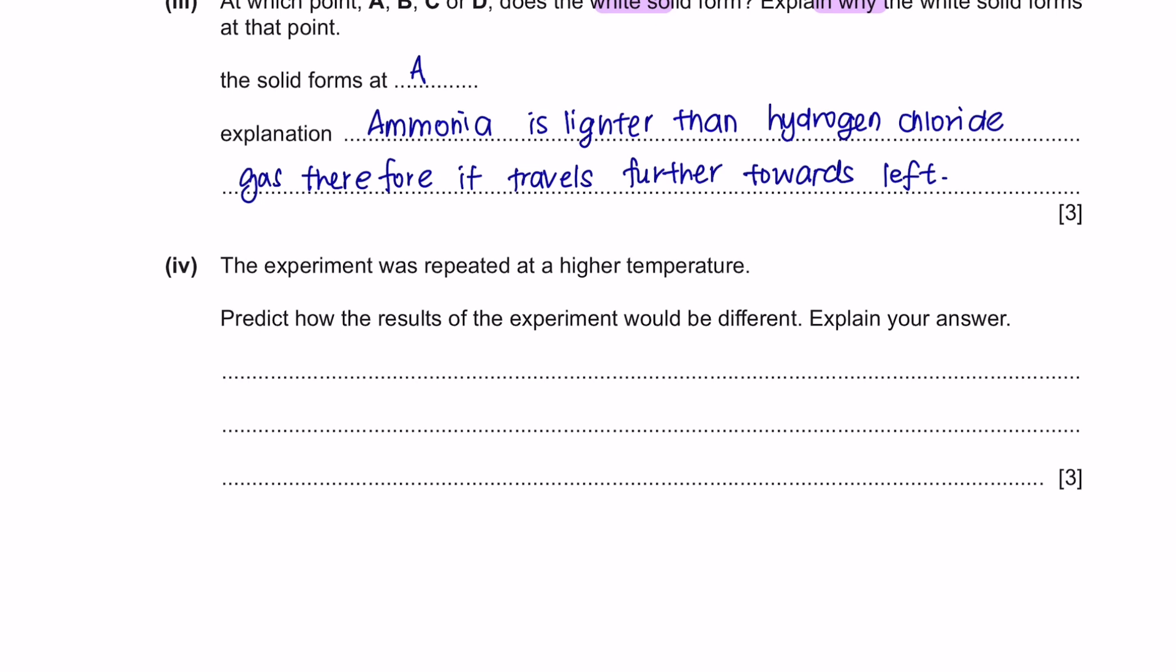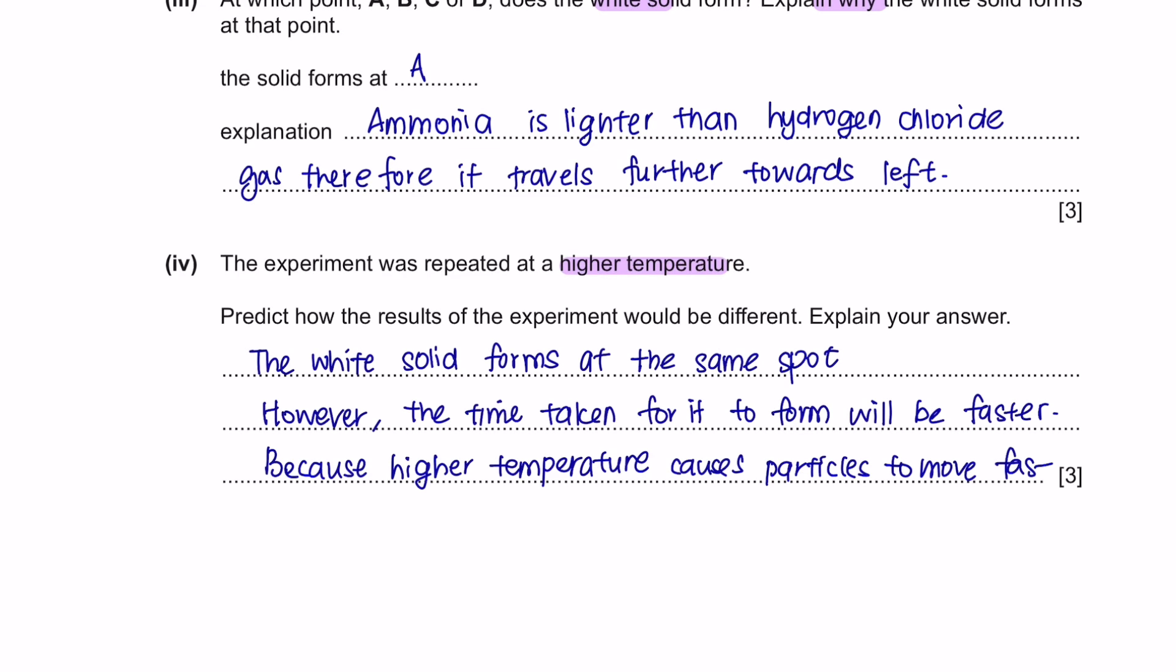Next, part 4. The experiment was repeated at a higher temperature. Predict how the results of the experiment would be different. So, the concept is going to be the same. We can say that the white solid forms at the same spot. However, the time taken for it to form will be faster. Higher temperature means the particles can move faster.